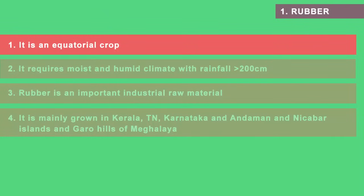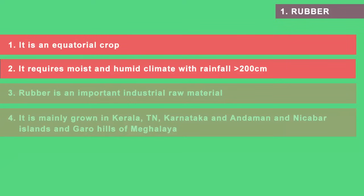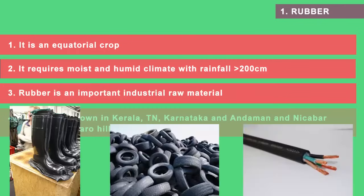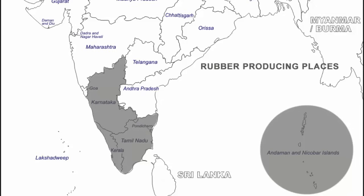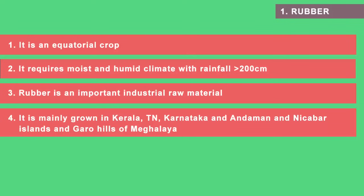The first non-food crop is rubber. It is an equatorial crop grown in countries in the equatorial region. To grow rubber you need a moist and humid climate and heavy rain of more than 200 centimeters. Rubber is an important industrial raw material. The states in India that grow rubber are Kerala, Tamil Nadu, Karnataka, Andaman and Nicobar Islands and the Garo Hills of Meghalaya — all places that receive heavy rainfall and are very humid.